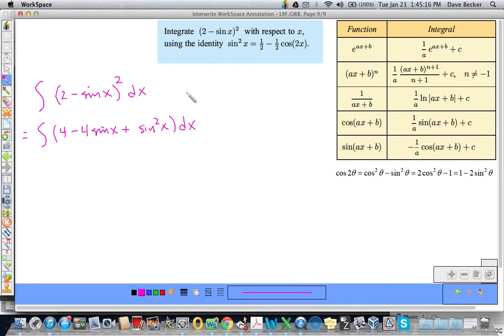But we know that sine squared equals 1 half minus 1 half cosine 2X. From this identity right here, cosine 2 theta is equal to 1 minus 2 sine squared theta. And if I solve for sine squared theta, I get this cowboy. So using substitution,